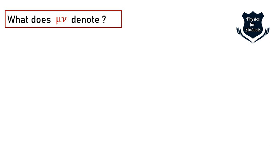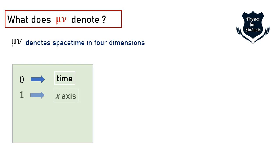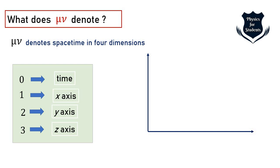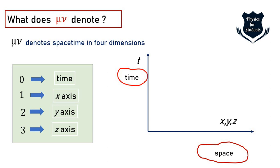Let's note what the Greek symbols μν denote. These symbols are used to denote indices related to tensors. In Einstein's field equations, μν denotes spacetime in four dimensions: zero is the time factor, one is the x-axis, two is the y-axis, and three is the z-axis. These are the spatial dimensions measured by μν with zero being time. So μν basically denotes spacetime in four dimensions.